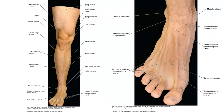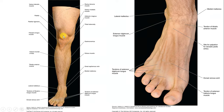Here we can see the anterior compartment of the leg covered by skin, with certain markers that can be appreciated over the leg. In this slide we see the patellar ligament attaching over the tibial tuberosity. It comes from the patella above — above it was the quadriceps tendon attaching to the upper border of the patella — and from the inferior border, the patellar ligament comes down and attaches to the tibial tuberosity.